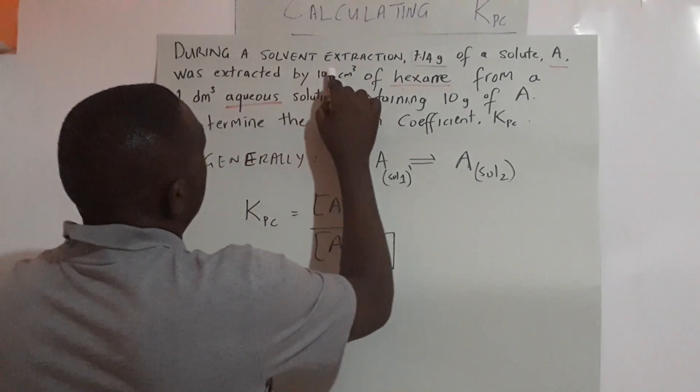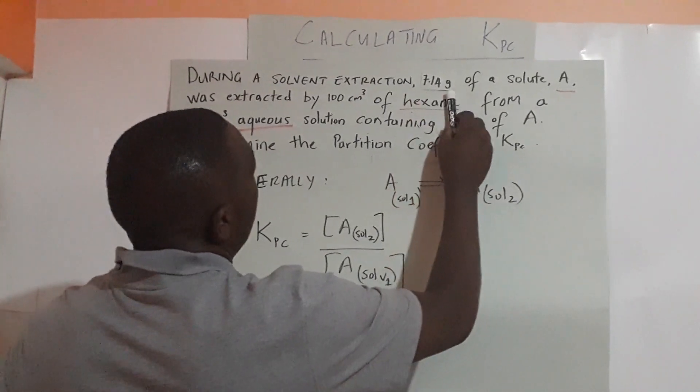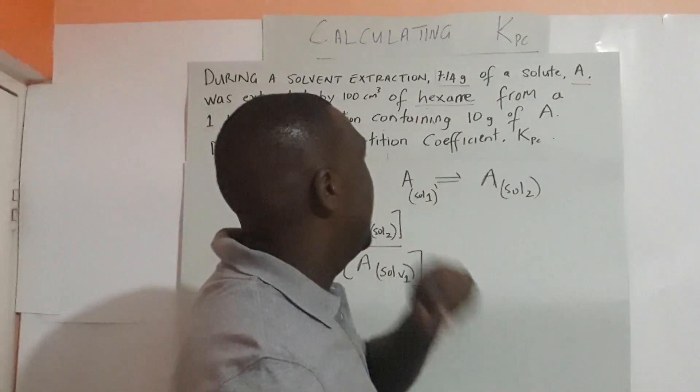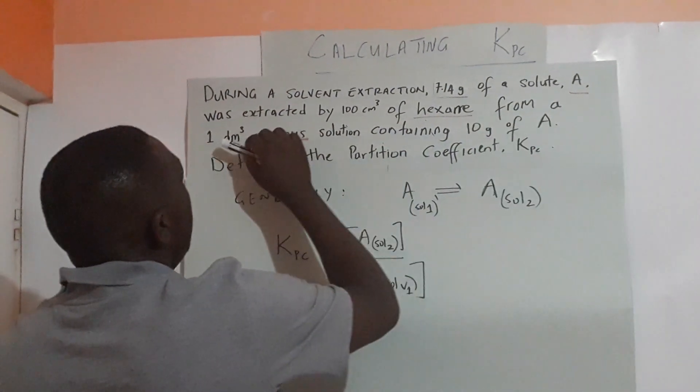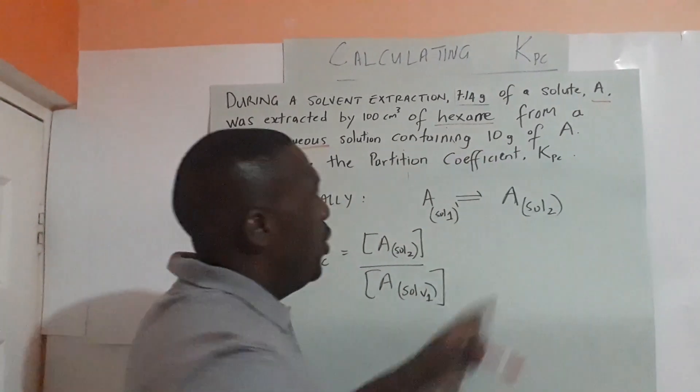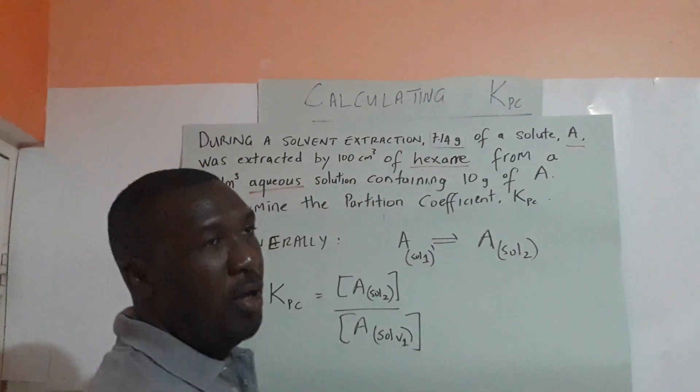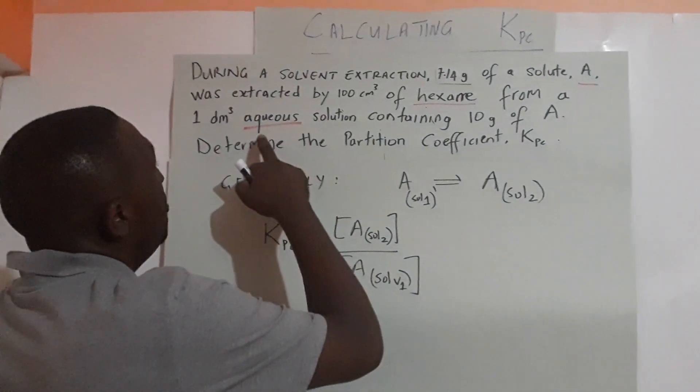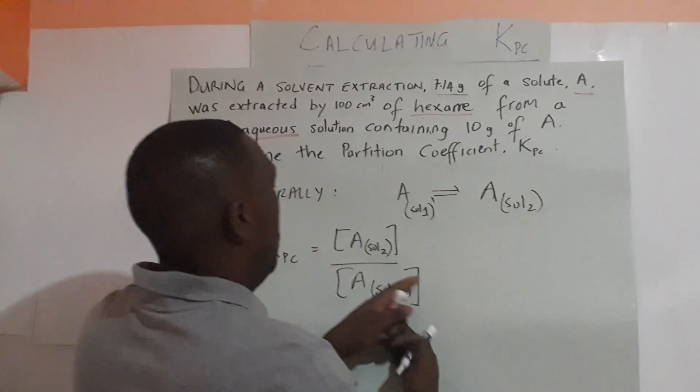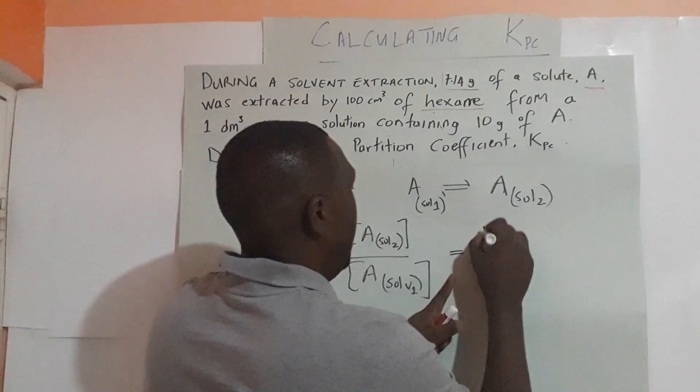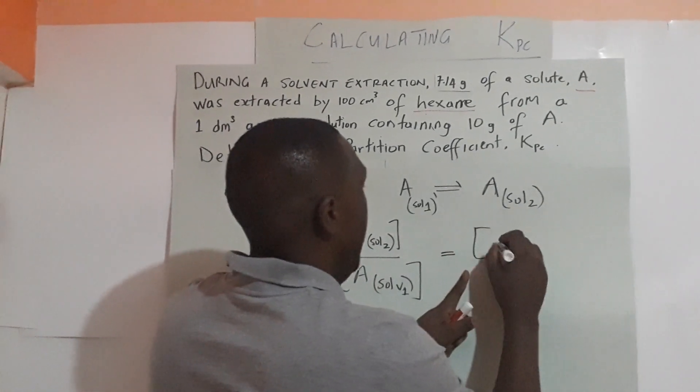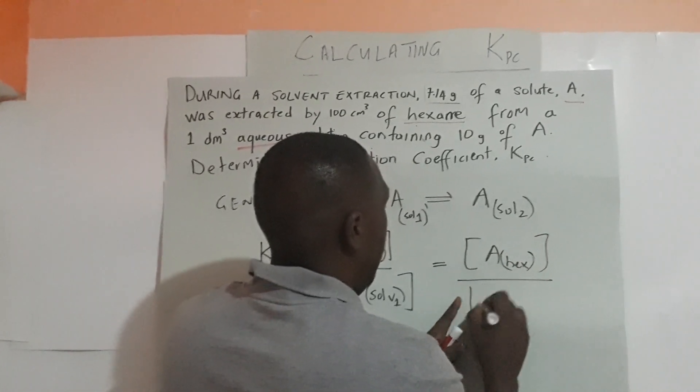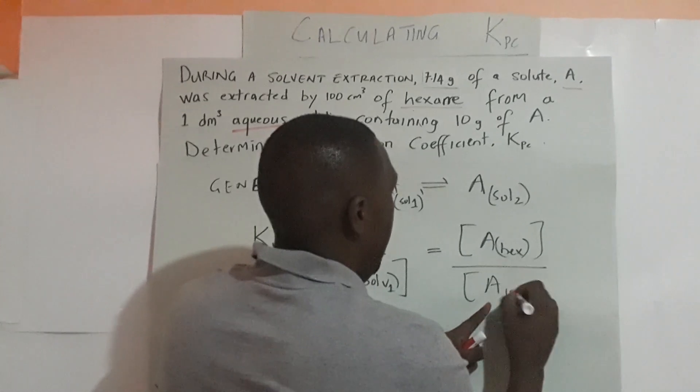It says during a solvent extraction, 7.14 grams of solute was extracted by hexane. That gives me a clue that hexane is solvent 2. It says from an aqueous solution containing A, so A was originally in the water. We can deduce that solvent 2 is hexane and solvent 1 is water. So for this reaction, KPC will be concentration of A in hexane over concentration of A in aqueous solution.